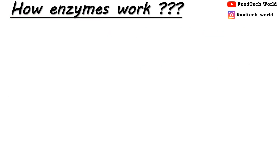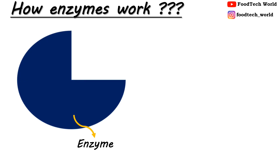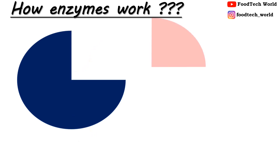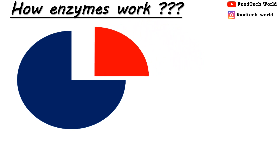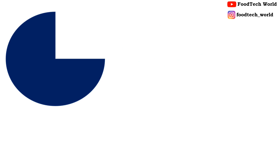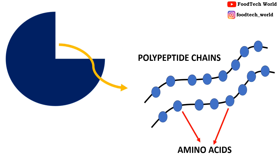Now how do enzymes work? Suppose this is an enzyme and this region is known as the active site. Active sites are the regions in the enzyme where substrate molecules are allowed to bind and perform a particular function, forming a weak, temporary interaction between the active site of the enzyme and the binding site of the substrate. Enzymes have a region where amino acid residues are arranged in one or more polypeptide chains, and by folding and bending of these polypeptide chains, a peculiar 3D structure is formed which is known as the active site.